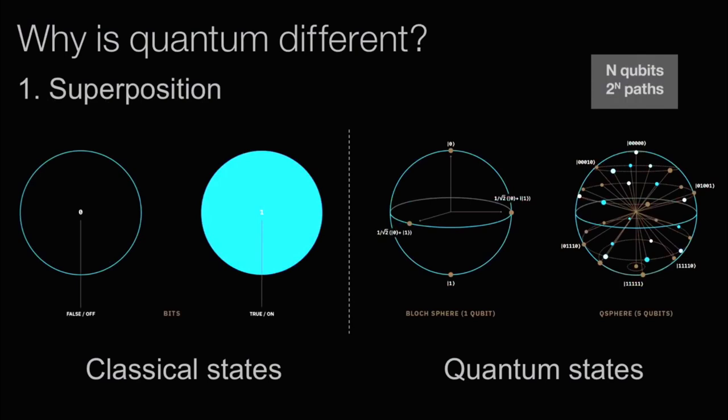So the diagram on the right is showing you a superposition of five qubits, right? So you can be in a superposition of 32 states. So superposition is the first thing.